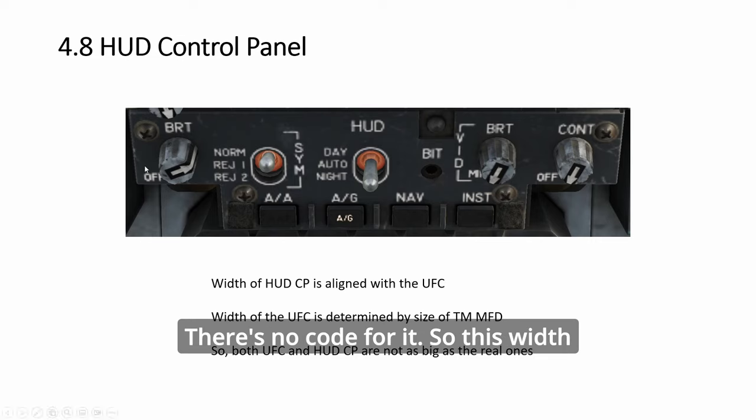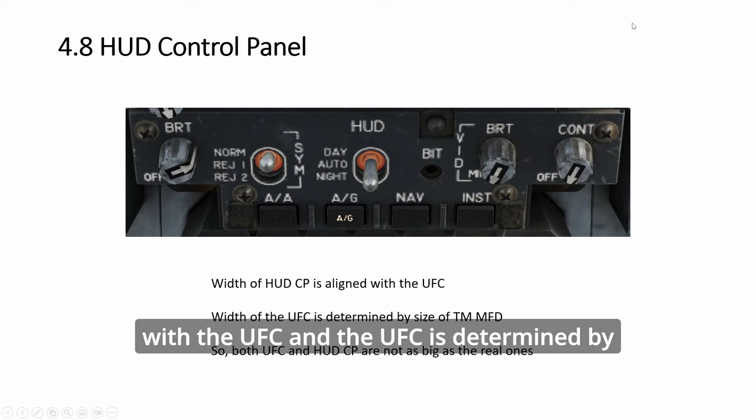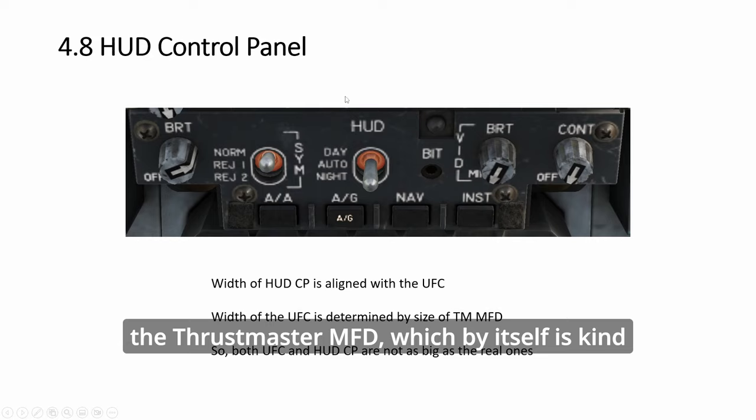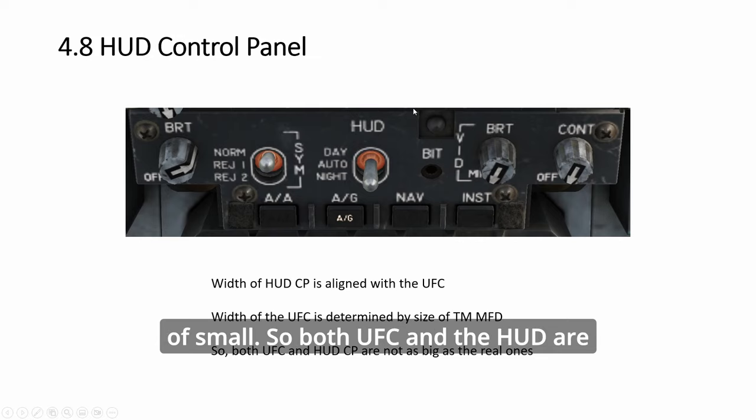So this width here, the one that I built, I align it with the UFC and the UFC is determined by the Thrustmaster MFD, which by itself is kind of small. So both UFC and the HUD are much smaller than the real one due to the fact that I'm just building it slightly bigger than the Thrustmaster Cougar.